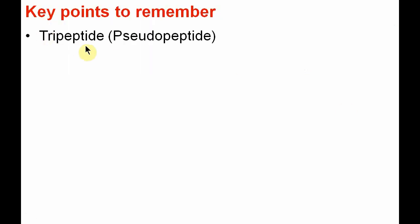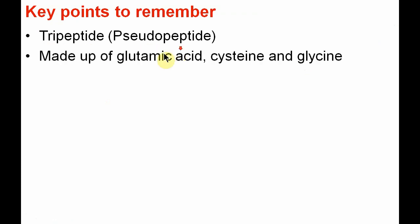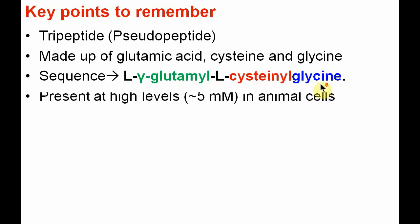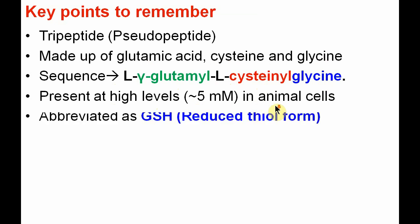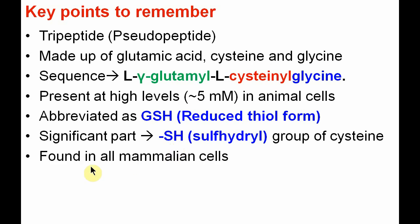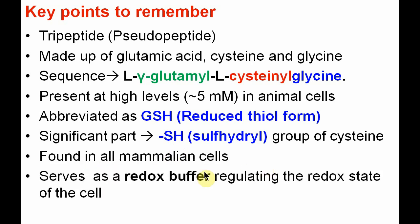So glutathione is called a tripeptide, also called a pseudopeptide. Why it is called pseudopeptide, the reason we will see later on. It is made up of three amino acids: glutamic acid, cysteine, and glycine. The sequence is L-gamma-glutamyl-L-cysteinyl-glycine. It is present at high levels, approximately 5 millimolar, in animal cells. It is abbreviated as GSH, i.e., the reduced thiol form. Its significant part is the sulfhydryl group of cysteine. It is found in all mammalian cells and serves as a redox buffer, regulating the redox state of the cell.